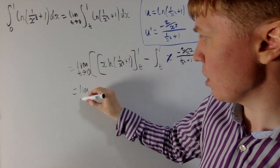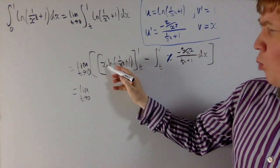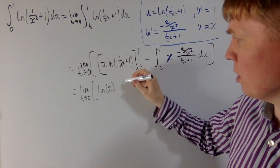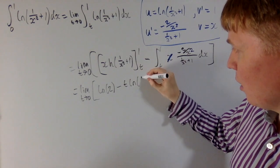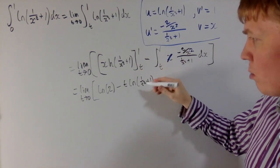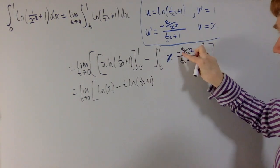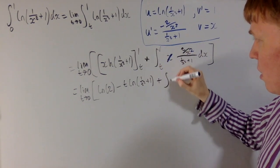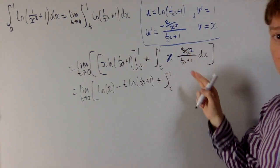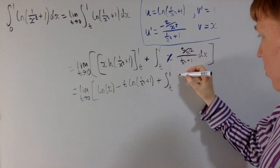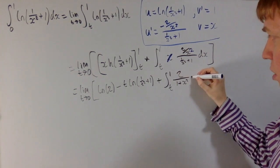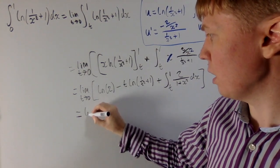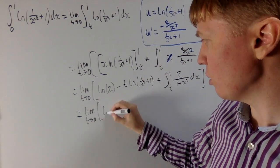Substituting x equals 1 gives 1 times ln(2), so just ln 2. Then we subtract t ln(1 over t squared plus 1), which we'll deal with in a moment. Multiplying top and bottom by x squared, the integral term becomes 2 over 1 plus x squared, which is actually really nice because this is just an arctan integral. So we end up with 2 arctan(1) minus 2 arctan(t). Including all terms: ln 2 minus t ln(1 over t squared plus 1) plus 2 arctan(1) minus 2 arctan(t).